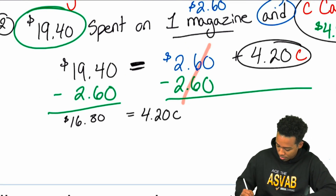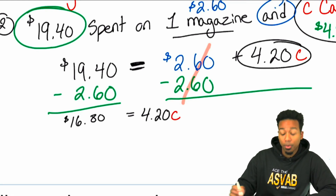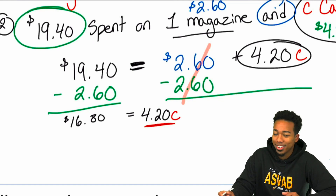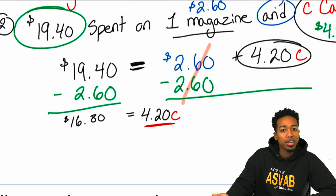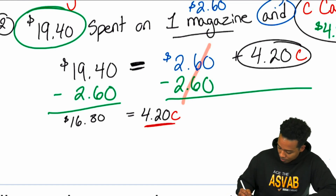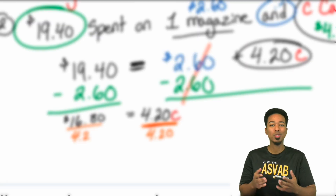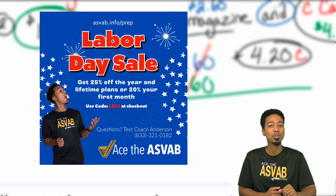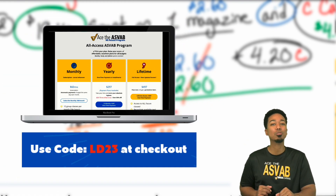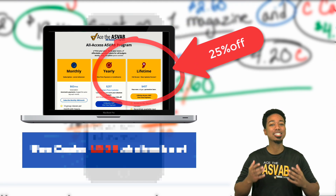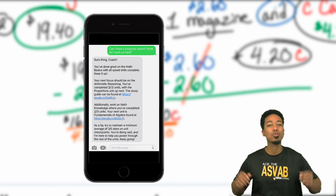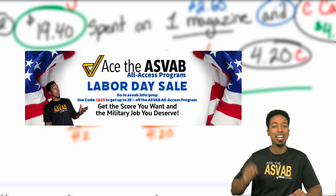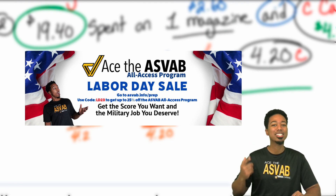So what happens now? We have 4.20 times C equals 16.80. We divide both sides by 4.20. Remember, raising your score and getting the job you want isn't luck — there's a process, and practicing effectively with us is the best way. This Labor Day, use the code to save 20% off your first month, or 25% off the year and lifetime packages. You'll get access to real-time progress reports by texting us anytime, 24/7, online courses with over 20,000 practice problems and step-by-step solutions — and that's just the tip of the iceberg.